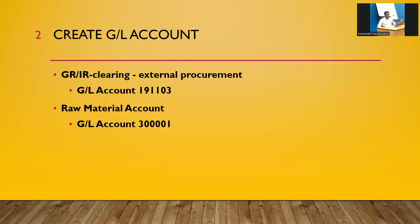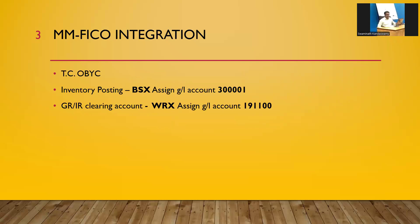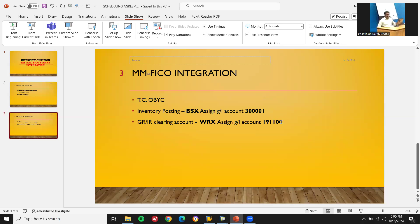From the FI side, I'm going to use FS00 to create two GL accounts: one for GRIR clearing (Goods Receipt Invoice Receipt) for external procurement, and one raw material account. The raw material GL account number is 300001, and the GRIR clearing account is 1900103. The integration point exists in transaction OBYC - inventory posting - where we assign GL accounts.